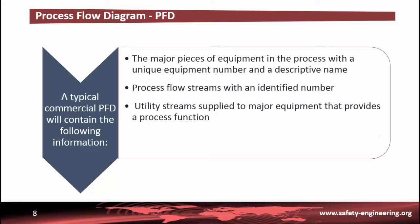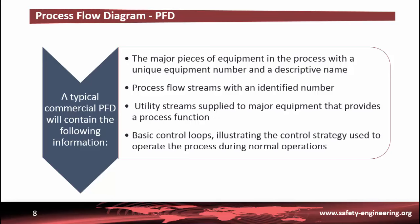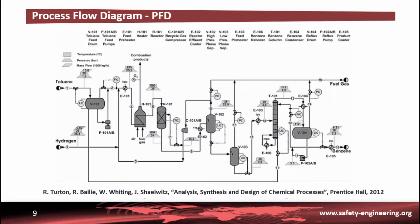Third, all utility streams supplied to major pieces of equipment that provide the process function are shown. And then, basic control loops illustrating the control strategy used to operate the process during normal operations are shown. This PFD illustrates the location of the major pieces of equipment and the connections that the process streams make between pieces of equipment for the production of benzene. The location and interaction between equipment and the process streams are referred to as the process topology.